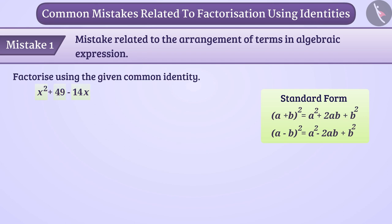We need to arrange the terms in the expression in order to do the factorization. x square and 49 are perfect squares in the given expression. So we can arrange this expression in this way.